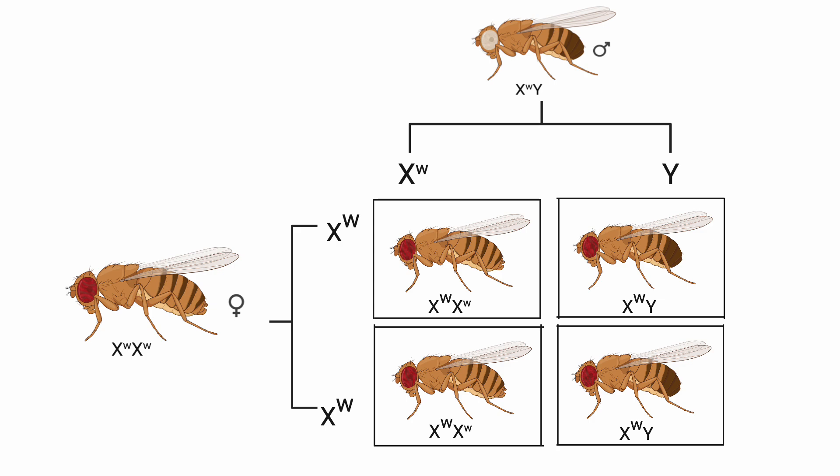First cross: all female offspring inherit one X chromosome from each parent, resulting in red eyes, X^W X^w. Male offspring inherit an X chromosome from the mother giving red eyes, and a Y chromosome from the father, leading to white eyes, X^w Y.